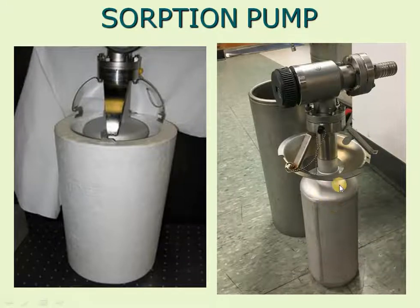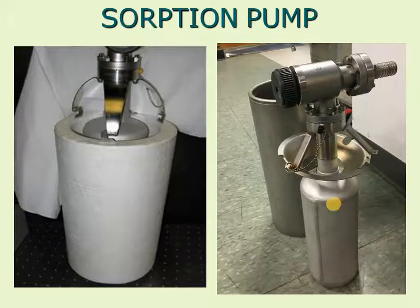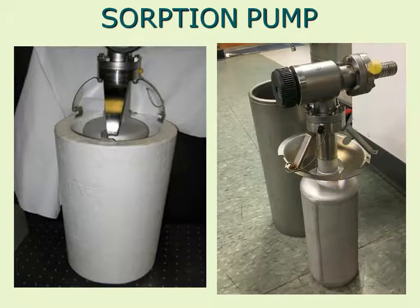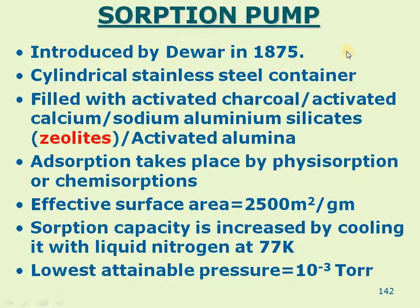The material inside is called zeolites. As the temperature goes down — as the material gets cooled to sub-zero temperatures, perhaps minus 70, minus 80, or minus 100 degrees Celsius — the adsorbing or absorbing capacity increases. The phenomena is inverse: as temperature goes down, capacity increases, so gas gets absorbed or adsorbed from the chamber.